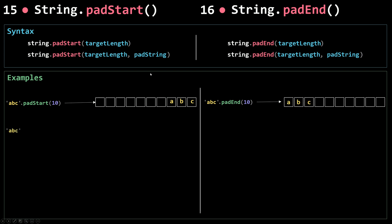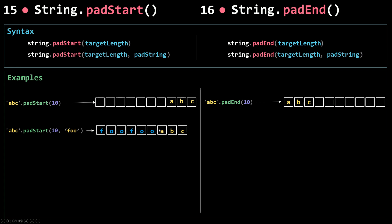Now let's see an example where I pass in a pad string. I'm passing 10 as the target length and 'full' as my pad string. So 'abc' will be padded with 'full'. My string didn't reach the target length of 10 — we have just 6 for the length — so it keeps padding with 'full' again. Now the string length is 9, and we still need one more character to reach 10. In that case, we just pad with the first character of the pad string, which is 'f'. That's the resultant string.